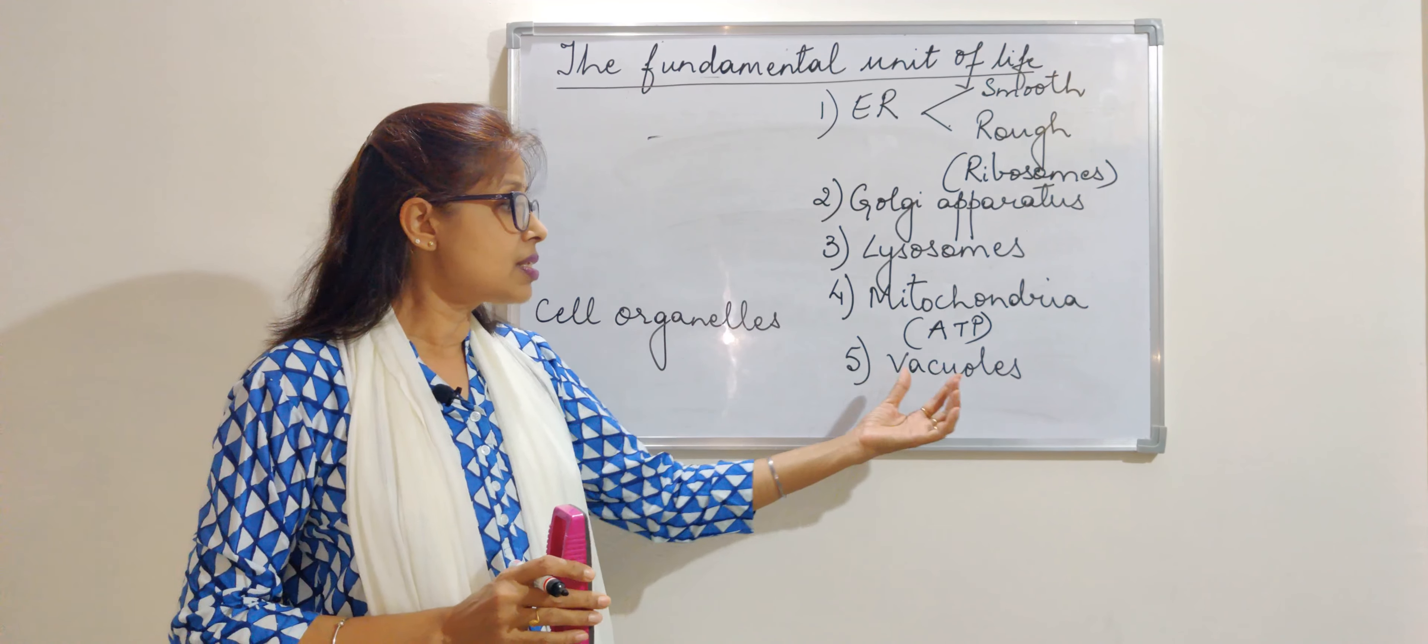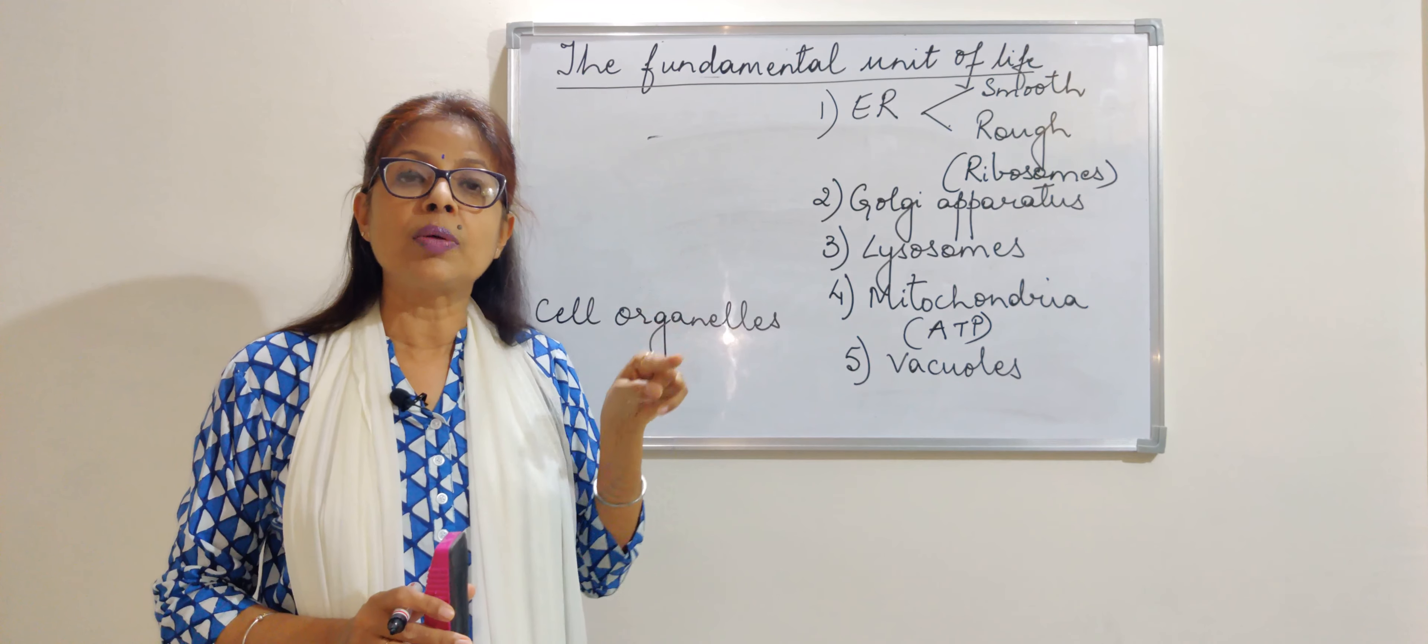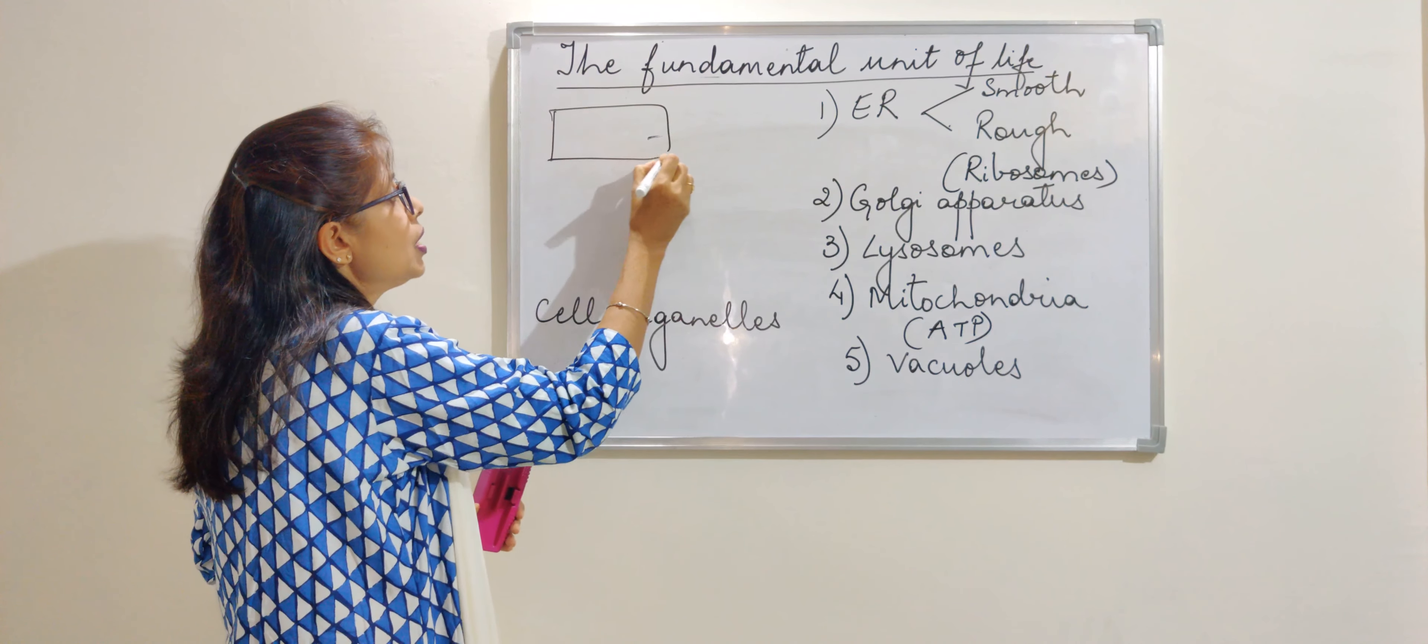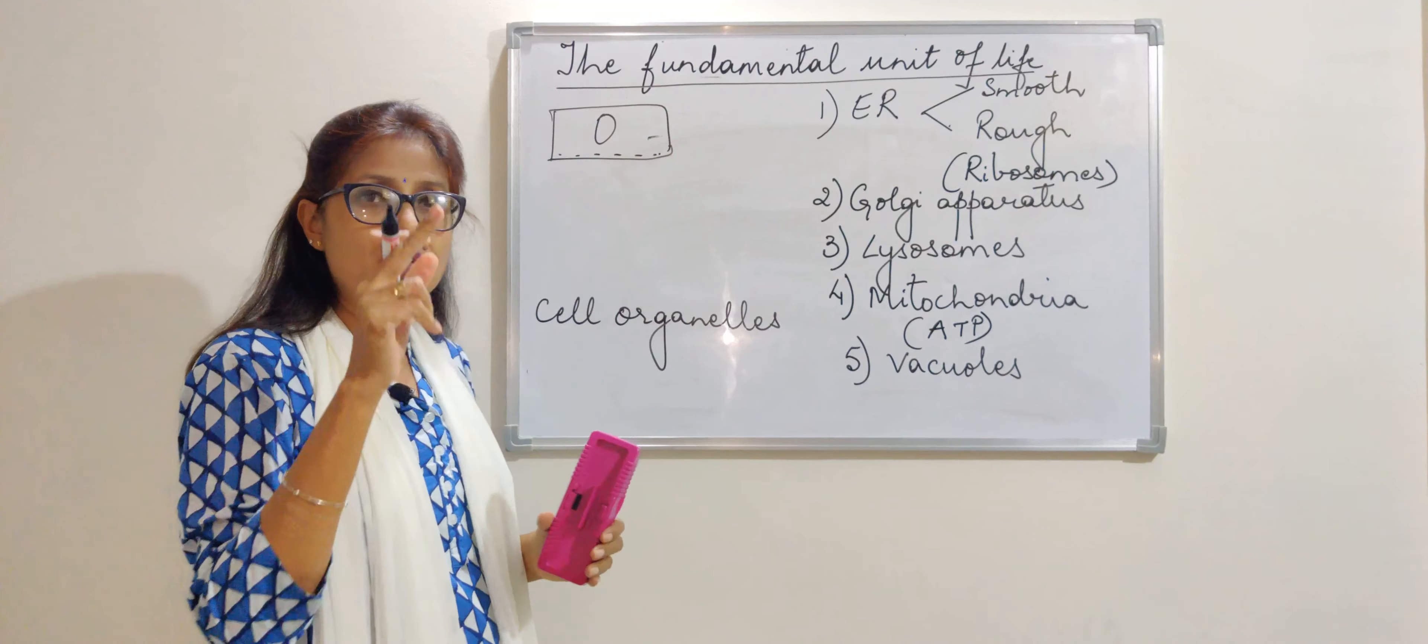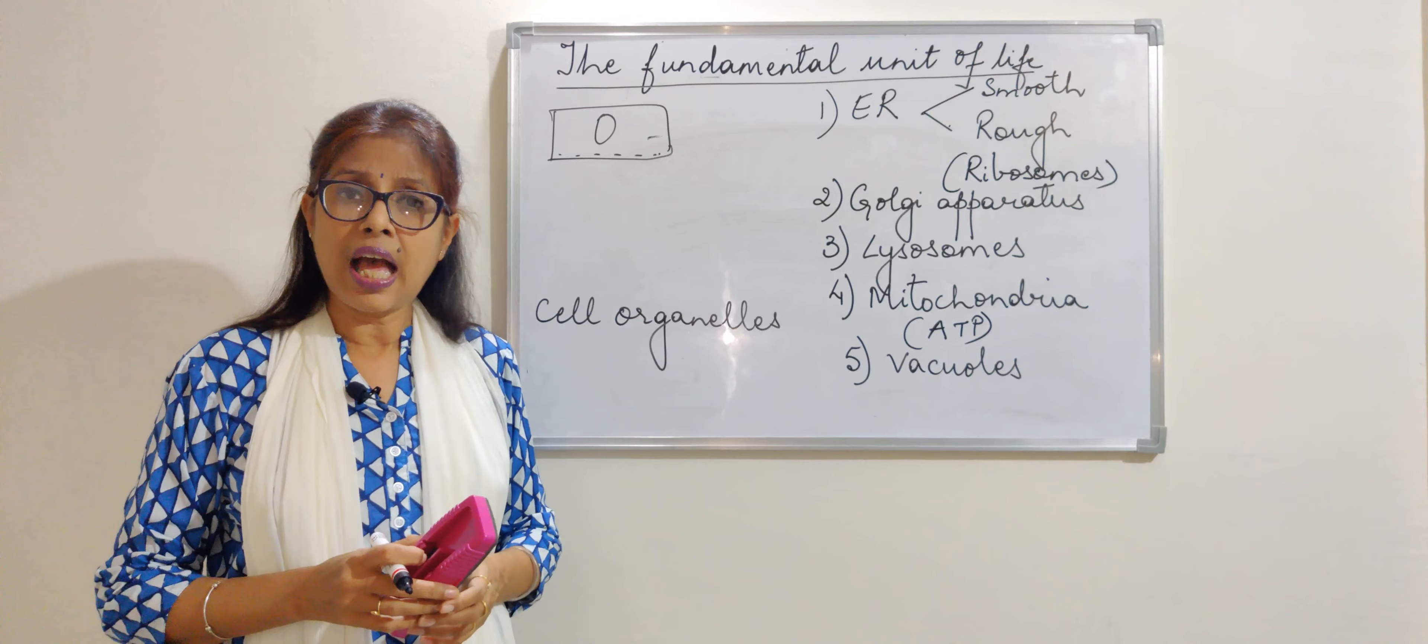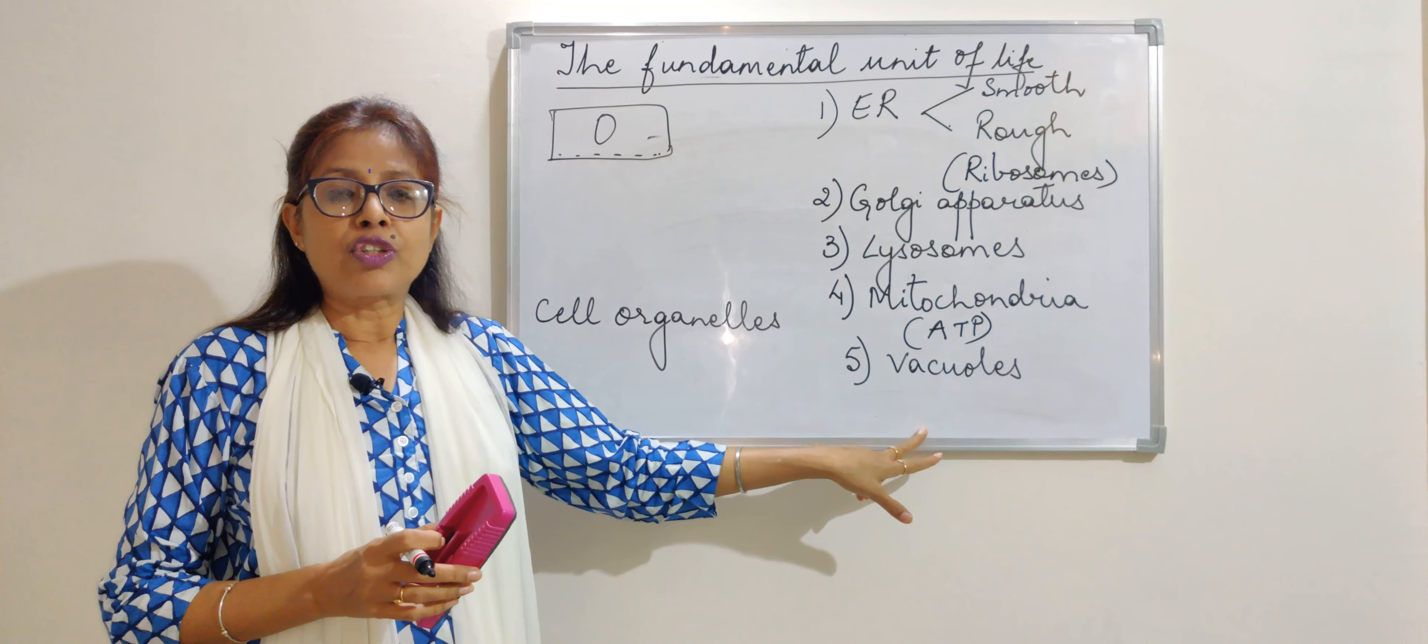In case of animal cells, the vacuoles are present—if they are present, they will be on the periphery of the cell. Periphery means at the side of the cell. In plant cell, this is in the center, and in animal cell, it is at the periphery, at the side. They may be absent also in case of animal cells.